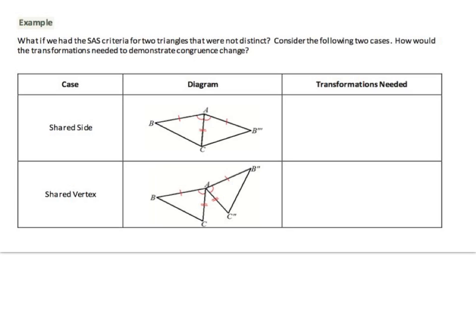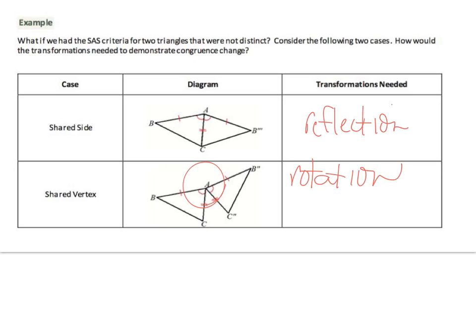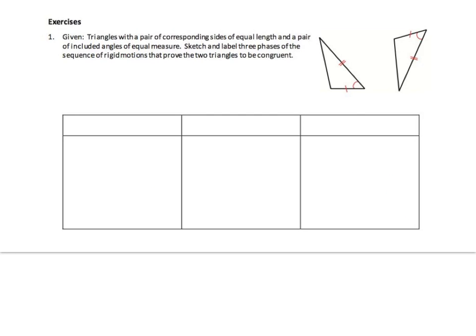Note that when using the side angle side triangle congruence criteria as a reason in a proof, you need only to state the congruence and side angle side. It will be easy just using that criteria. Our first case: when you have a shared side, the transformation needed is a reflection. With a shared vertex, the criteria needed is a rotation and then a reflection.